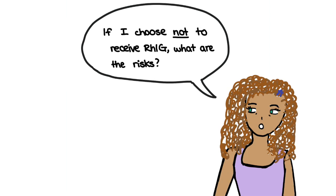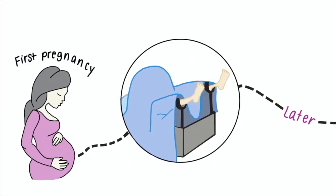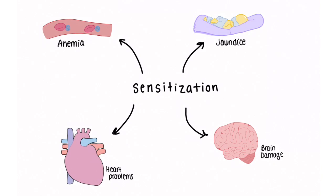If I choose not to receive RHIG, what are the risks? It is your choice whether or not to receive RHIG during your pregnancy. If you choose not to receive RHIG, your risk of sensitization is significantly higher during your next pregnancy. As previously mentioned, sensitization can lead to negative effects on the baby. The risk of complications tend to increase with each RH-positive pregnancy you have.